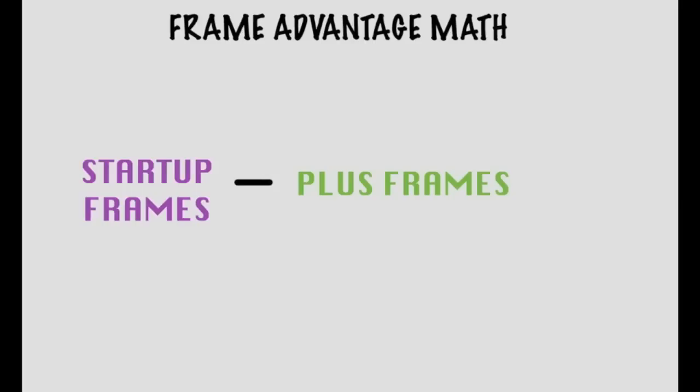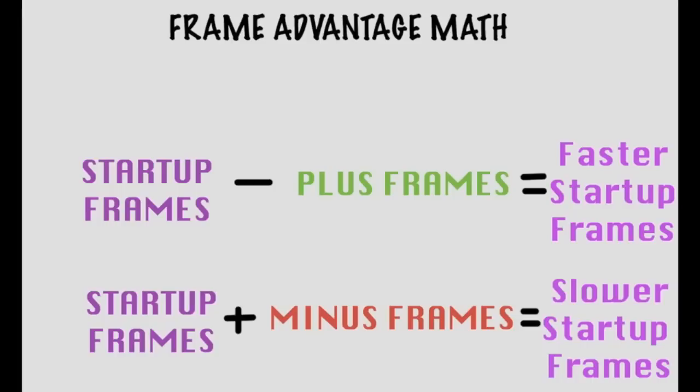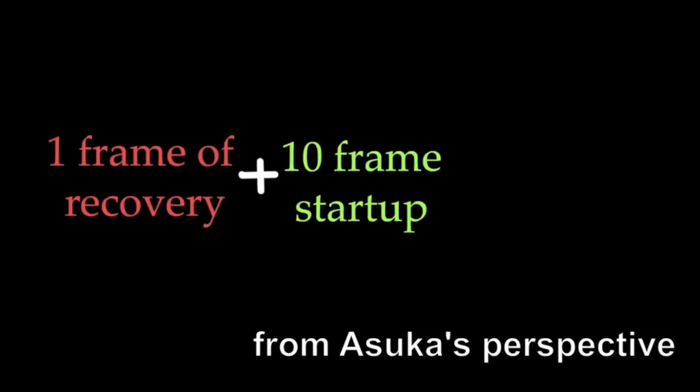This can be counter-intuitive, but whenever you see plus frames, subtract it from startup frames because you have to be faster. Whenever you see minus frames, it means you have to add to your startup because you have to be slower. If you gain nothing from this video, at least remember this method of calculating frame advantage — it's very useful. For Asuka: 1 frame of recovery plus 10 frames to start up equals an 11-frame move. For Law: 10 frames to start up minus 1 frame of advantage equals a 9-frame move.